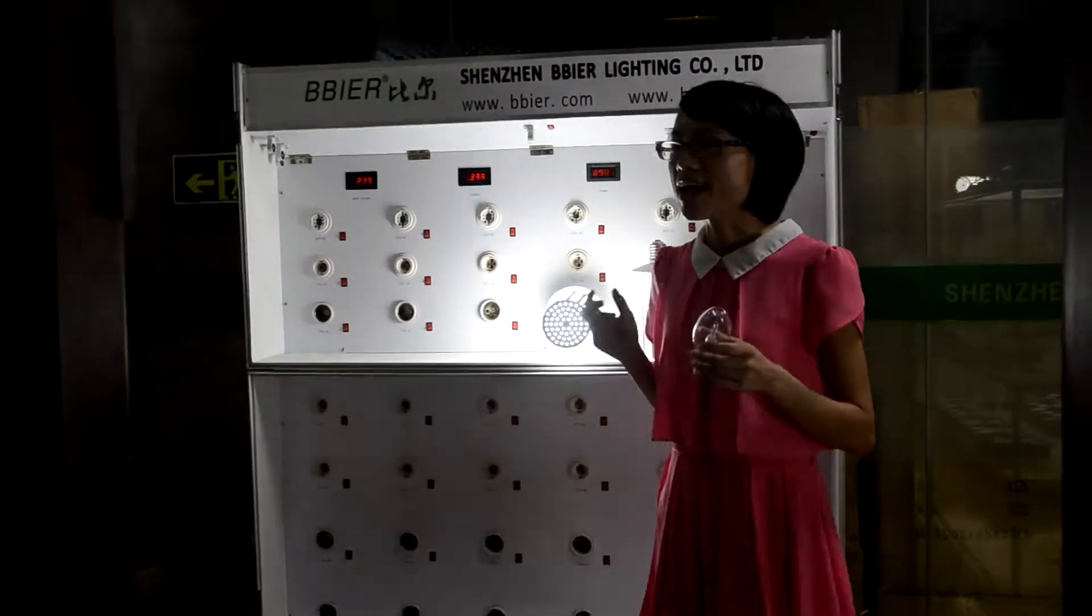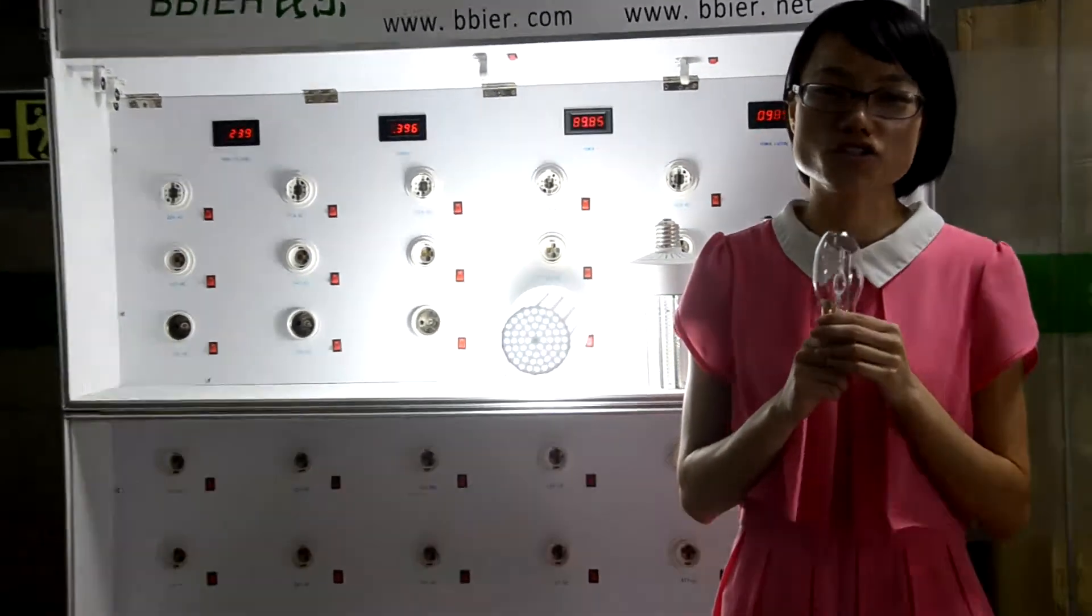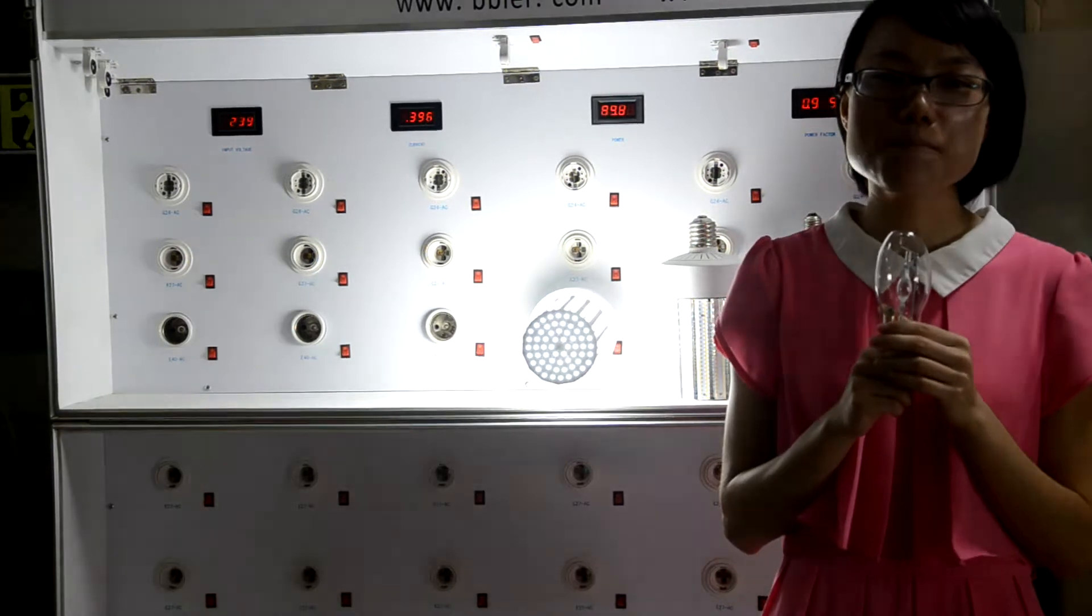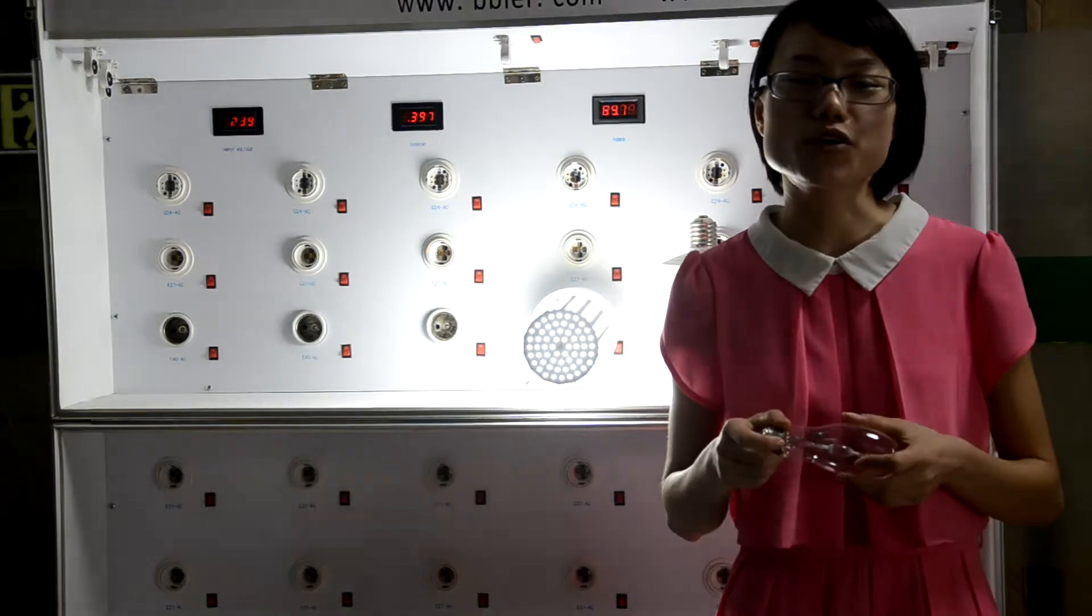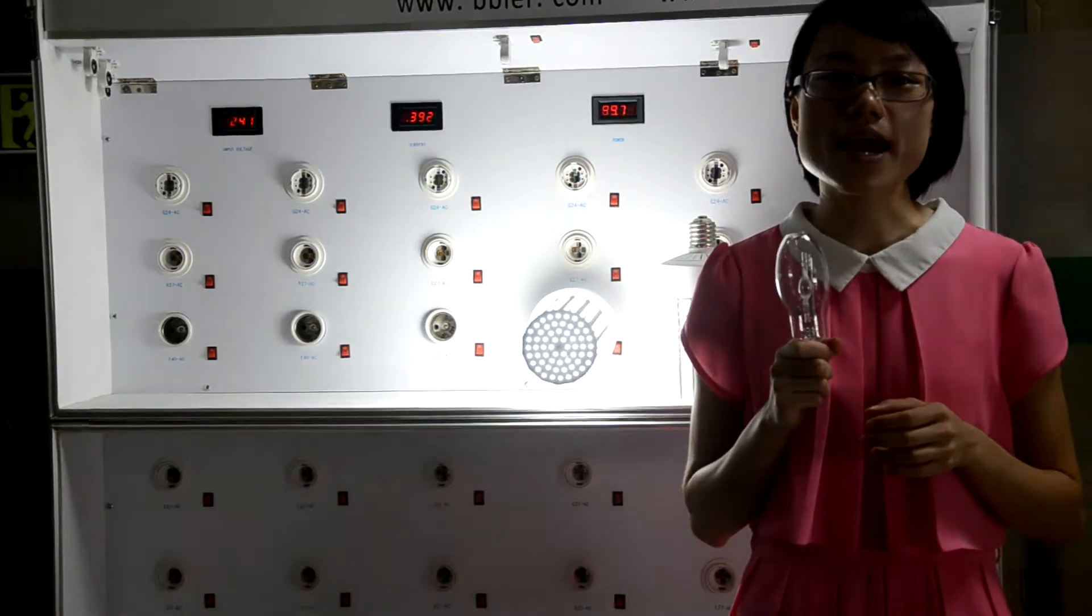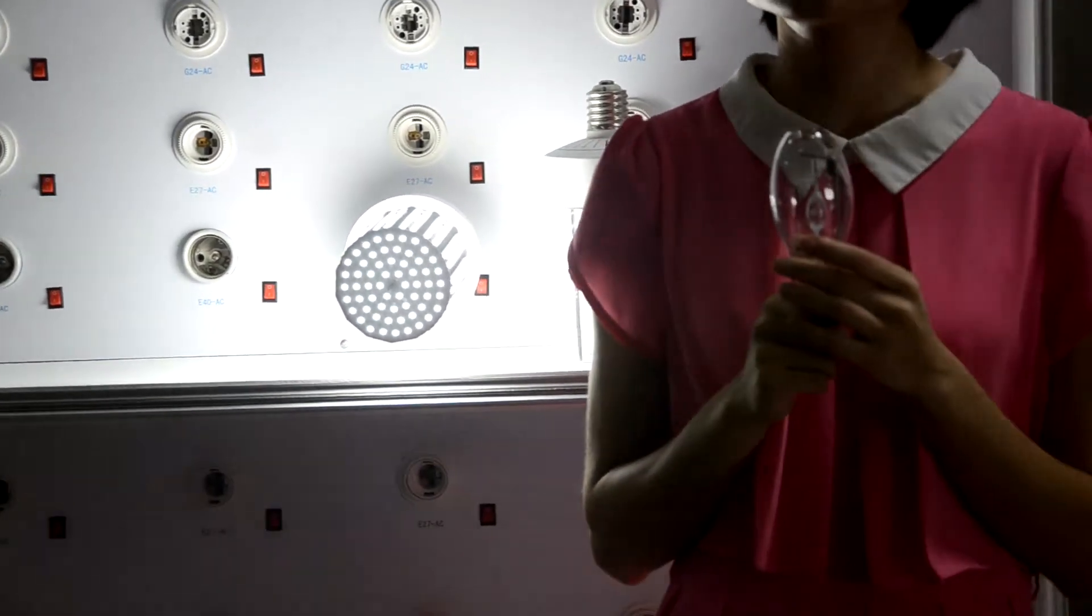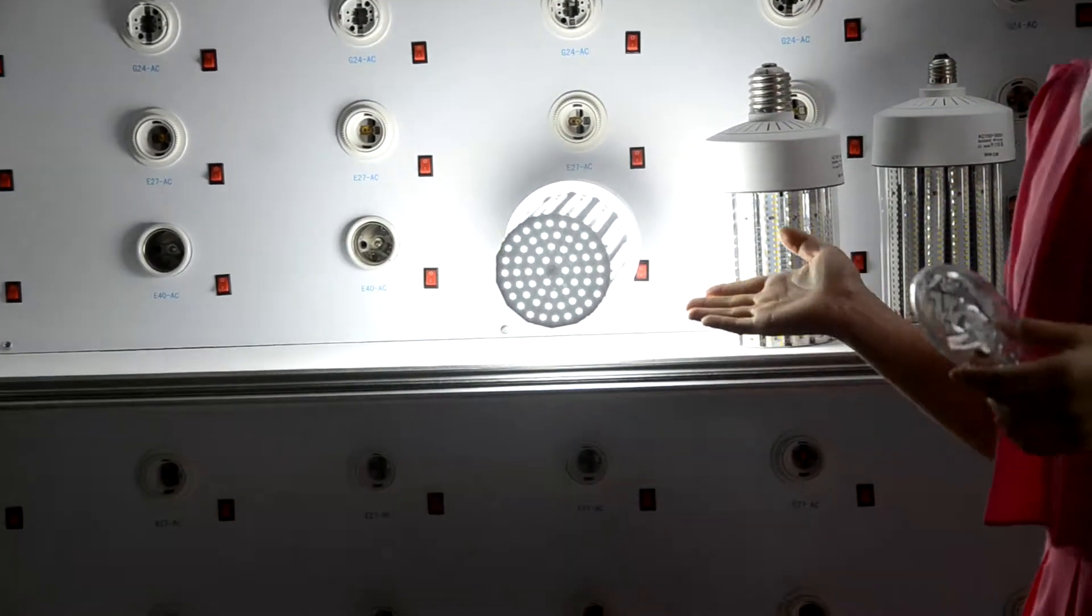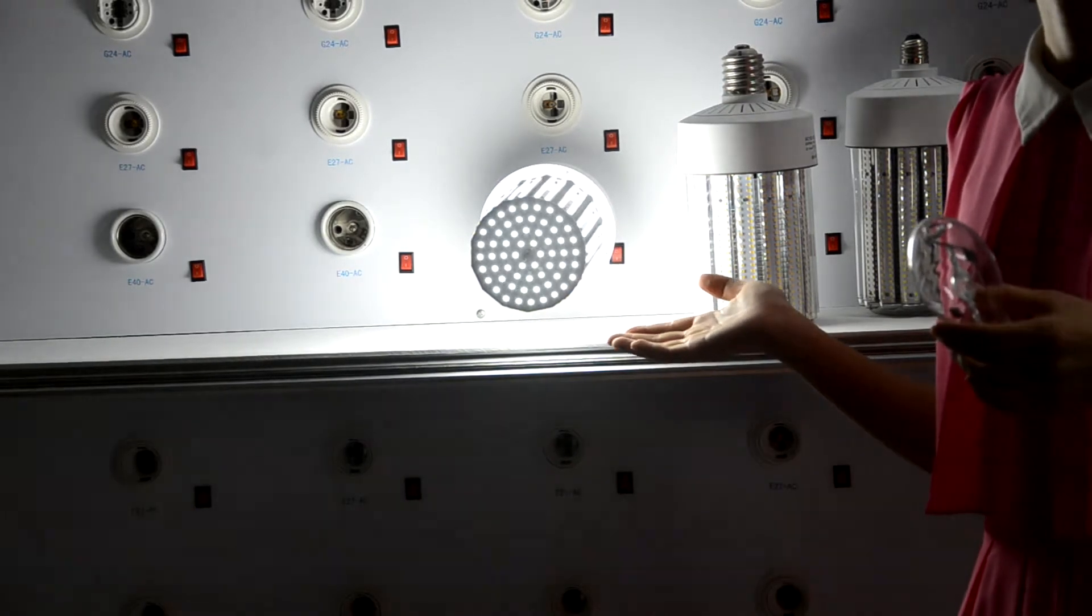You will see 90 wattage can replace 250 wattage traditional bulb. You will see how much electricity you can save. Let me take an example for you. If you are lighting this bulb in a day, it's 8 hours. It will cost you around 2 degrees. And if you use the 90 wattage bulb, it only costs 0.7 degrees.